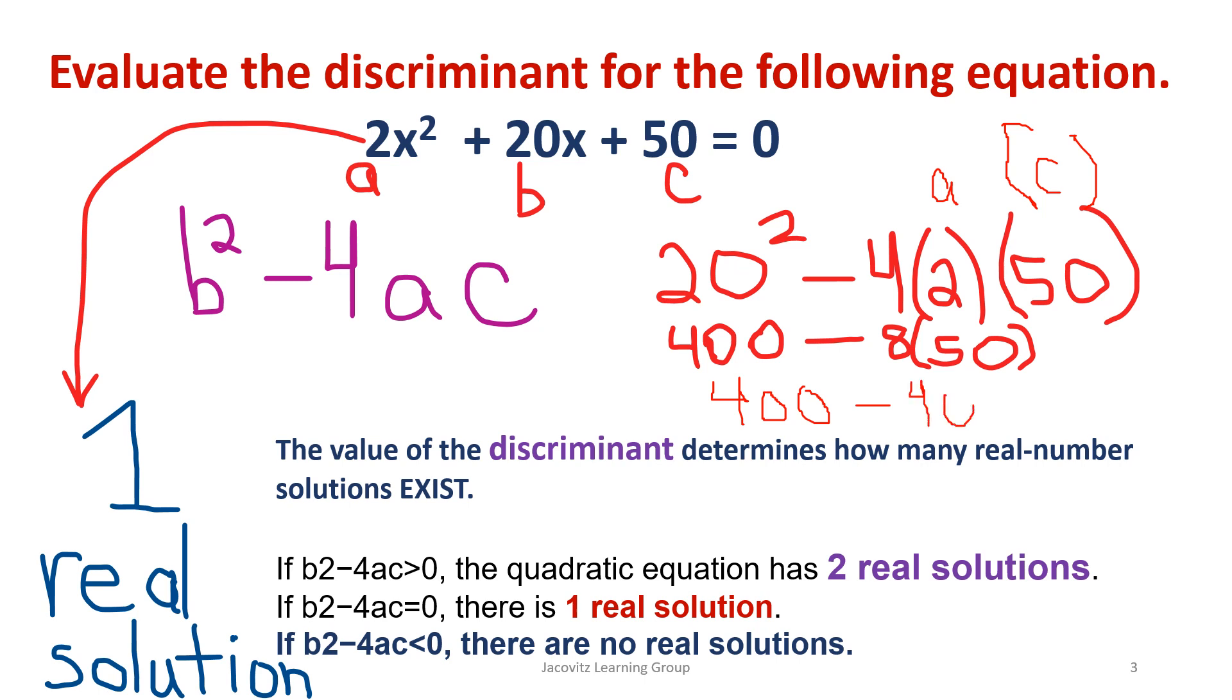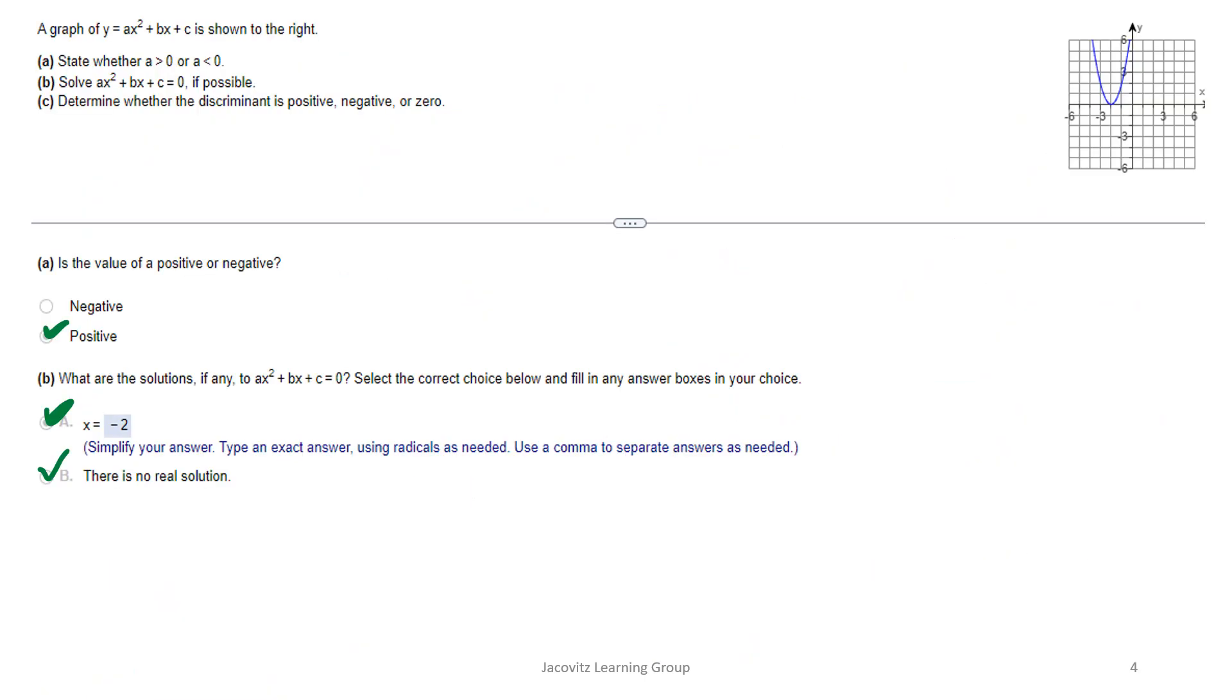This now becomes 400 minus 400, and that becomes 0. If that's 0, then there's only one real solution. Be careful about how you're doing this, and remember, this c value is larger than this a value, and that might change how things are going to work in this equation.